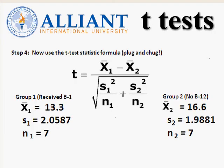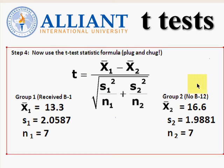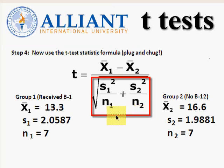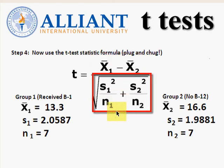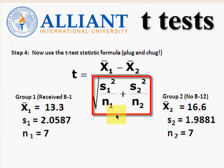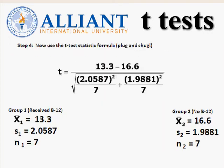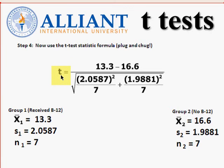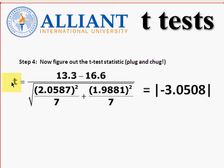Here's the t-test statistic formula — let's go ahead and plug in all our values. The denominator tells us how many shared standard deviations away these two means are from each other. If it's going to be more than two standard deviations away, we're going to have to reject the null. This is called the pooled variance between both groups. We get a final t-score of negative 3.0508, and we take the absolute value of it because that's the way t-tests work.